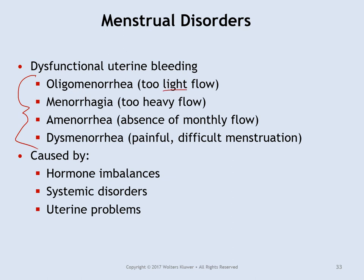Some menstrual disorder terms to know for the quiz: oligomenorrhea is very light menstrual flow — regular periods but very little blood. Menorrhagia is the opposite — very heavy menstrual flow (the suffix '-rrhagia' as in hemorrhage). Amenorrhea means the patient is not having monthly menstruation for whatever reason. Dysmenorrhea means painful menstruation, usually associated with cramps. These can be caused by hormonal imbalances, other systemic issues like low thyroid hormone, or problems with the uterus itself.